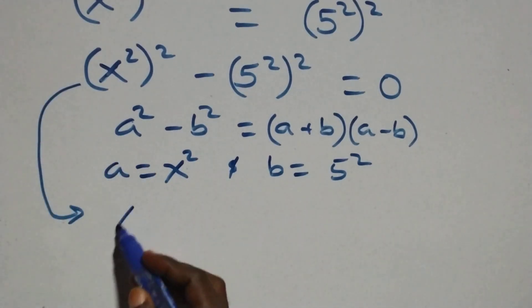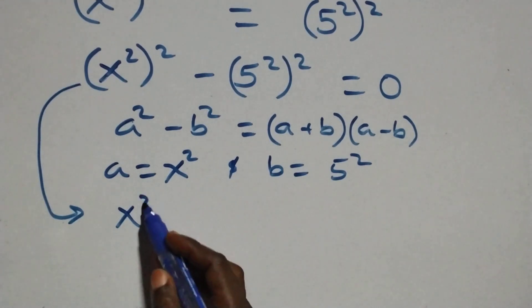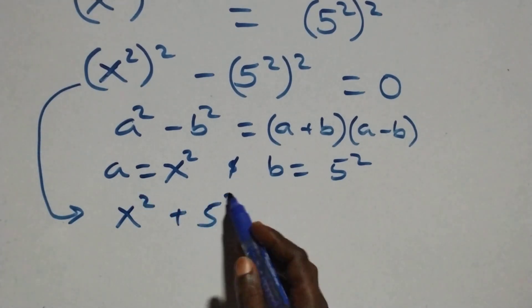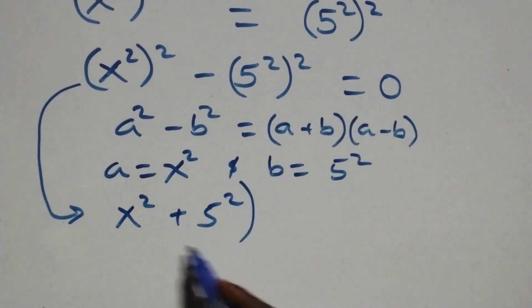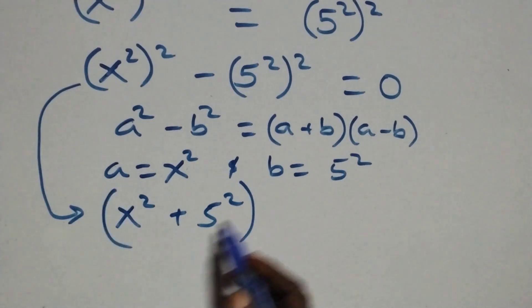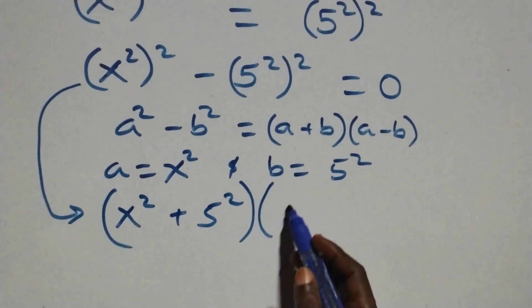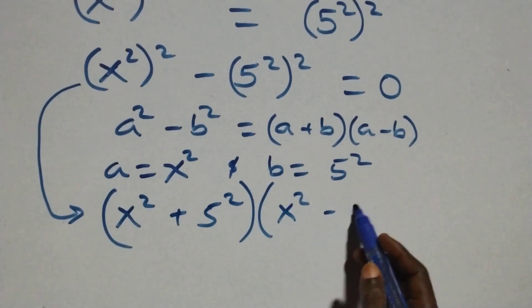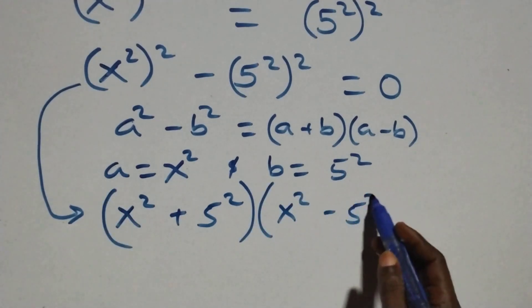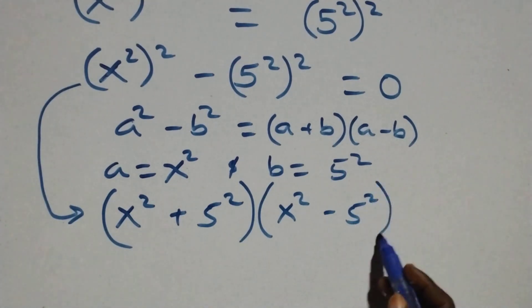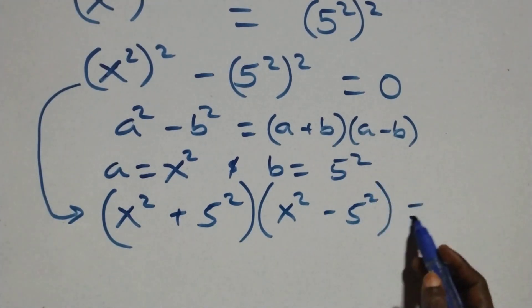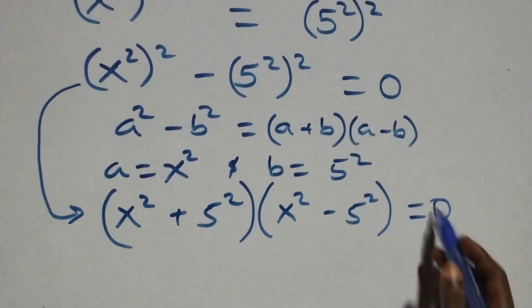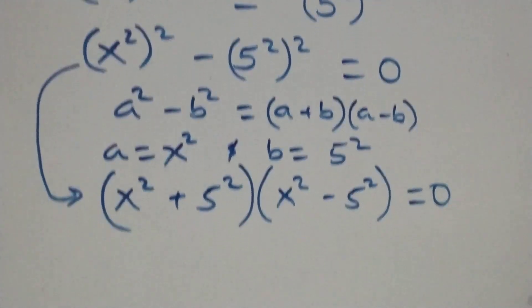What we have here becomes (x squared + 5 squared) times (x squared - 5 squared) equals zero.